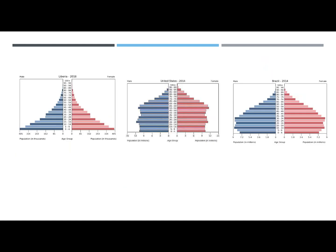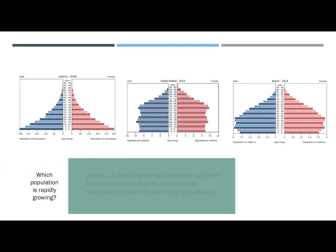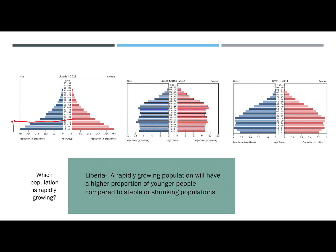Here are three different age structure diagrams and they tell us very different things about these populations. Which one of these populations would you guess is growing rapidly? We would say it's Liberia, because a rapidly growing population will have a higher proportion of younger people compared to stable or shrinking populations. This pre-reproductive group is very large and gives it that triangle shape, as compared to the relatively flat shape of the United States or the almost Hershey kiss shape of Brazil.